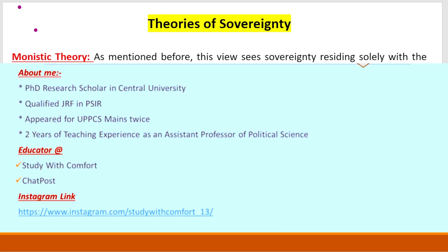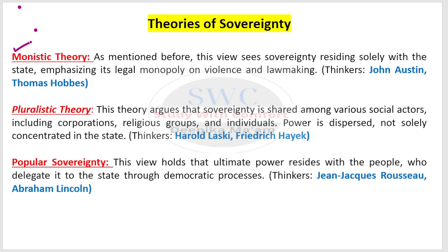Hi everyone, this is Dipka, welcome back. I hope you are all very well and welcome to Study with Comfort. In today's session we will try to cover the first theory of sovereignty, which is the monistic theory of sovereignty. We will discuss the basic characteristics, contributions of John Austin and Thomas Hobbes, and specific criticisms including how this theory became outdated after the second world war when supranational actors emerged.